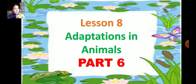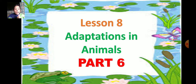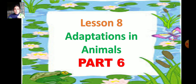What is adaptation? Adaptation is the ability of an animal to adjust to its environment. This adaptation is important because it helps animals protect themselves from animals that harm them.